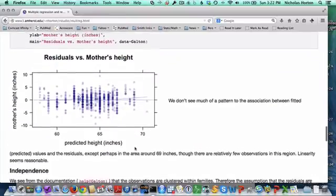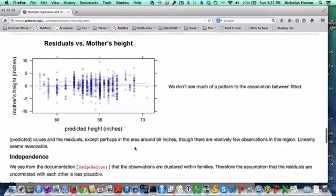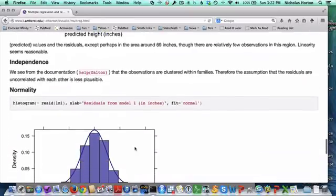We can also look at the residuals versus mother's height by doing a scatter plot here of height versus the residuals versus predicted height. And we don't really see much of a pattern here, though there are relatively few observations in this region. So again, this looks pretty reasonable to us.